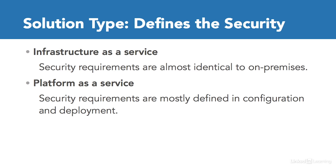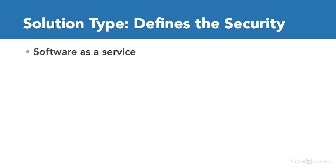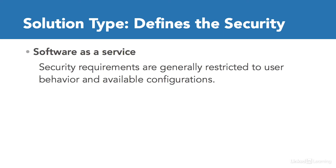You will define all of those as part of your deployment solution. In a software as a service solution, security requirements are generally restricted to the way users behave and the available configurations in the user interface of Microsoft Azure. For example, an application deployed as software as a service such as Exchange Online provides a set of user settings and configurations — how you manage those settings defines your security, such as password reset frequency or how emails are retained or encrypted.